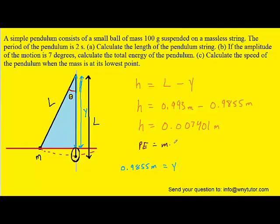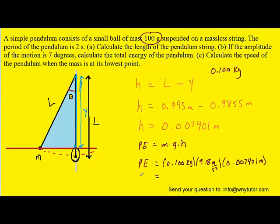We can now calculate that gravitational potential energy by plugging into M times g times h. For the mass M, just make sure you convert it into kilograms, so we'll have to use 0.1 kilograms. We can see that the total energy or the gravitational potential energy at that point is going to be roughly 0.00725 joules. This would be the correct answer to part B.